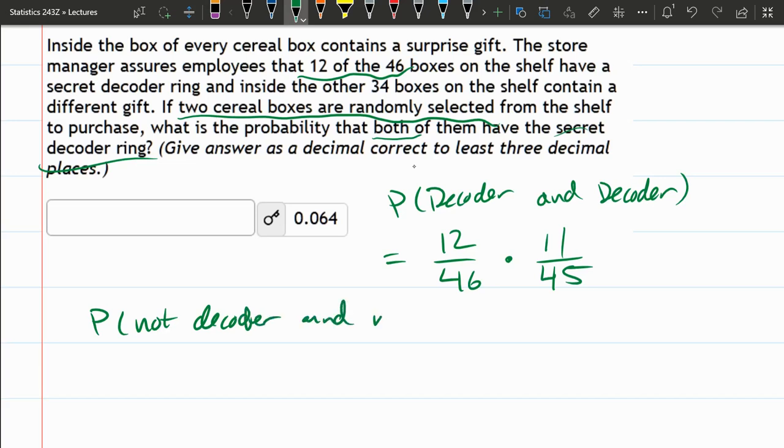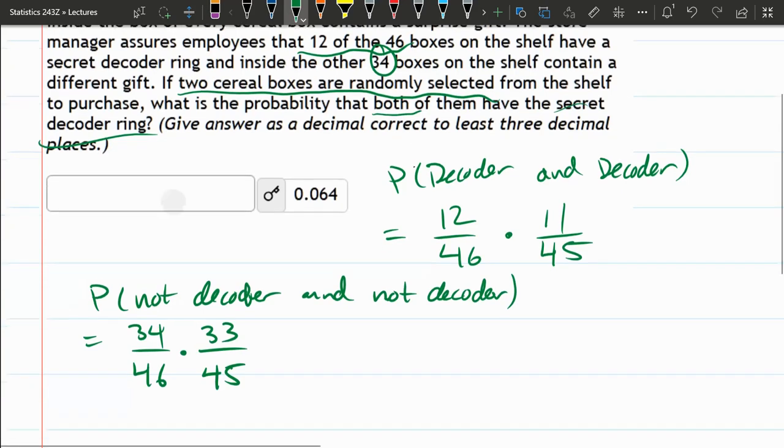So let's say probability of not decoder and not decoder. So there's 34 without the decoder. So it's 34 out of 46 that you'd get a not decoder. And then the second not decoder is 33 out of 45. There's one less decoder, one less total.